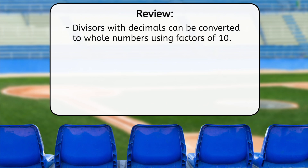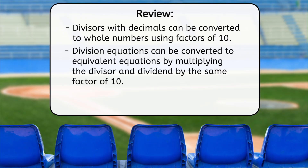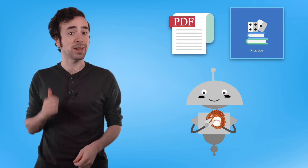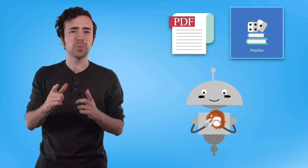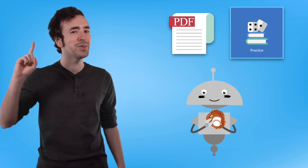You learned that divisors with decimals can be converted to whole numbers using factors of 10. Division equations can be converted to equivalent equations by multiplying the divisor and dividend by the same factor of 10, and equivalent division equations result in equal solutions. Be sure to complete the practice questions and extension activities that go along with this lesson. Because, like Mia, with some practice, you'll be hitting division home runs in no time. See you next time!